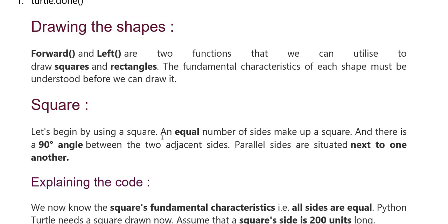First, square. A square, which we have to start using, has an equal number of sides that make up a square. 90 degree angles which we have between two adjacent sides. Parallel sides, which we have situated next to one another. Explain the code.